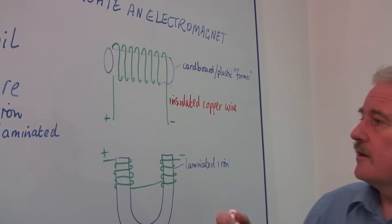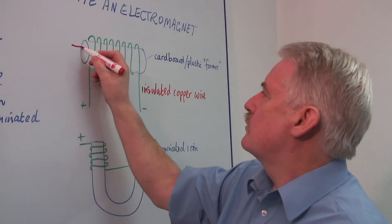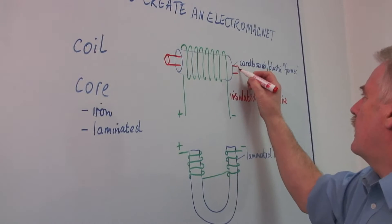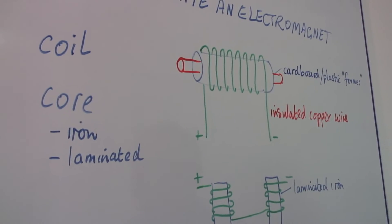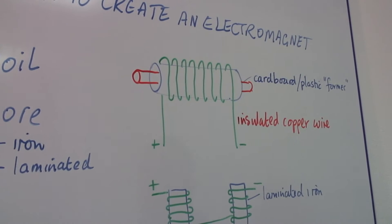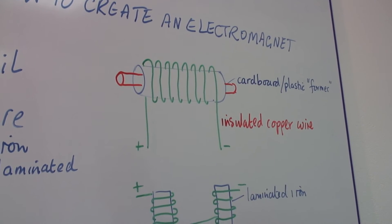And we take the core and we simply put it inside the tube, and that will increase the strength of the electromagnet by a factor of ten or so. It's a very effective way of increasing the strength.